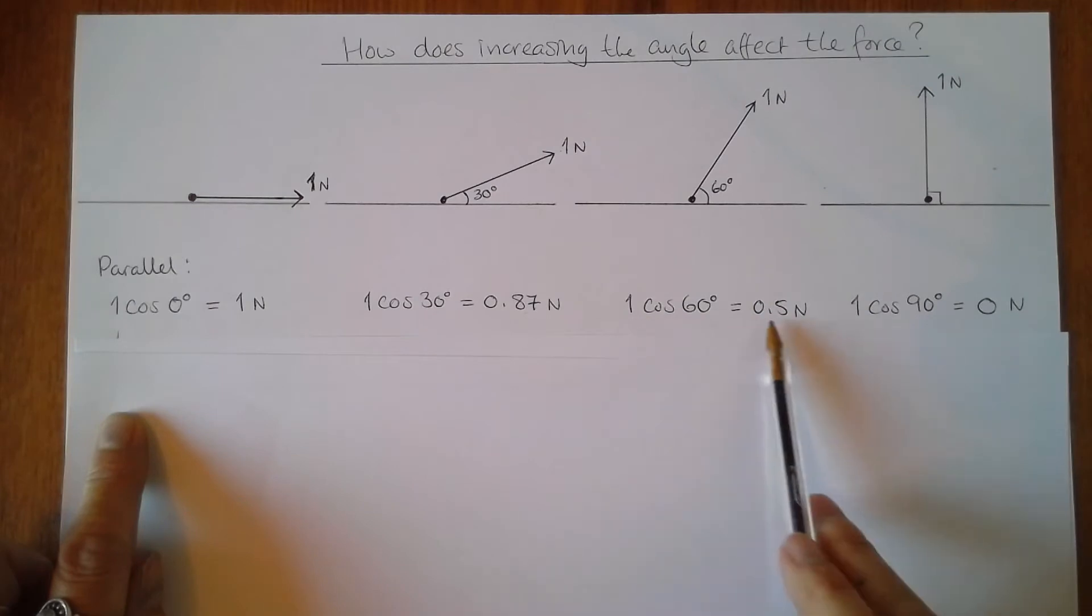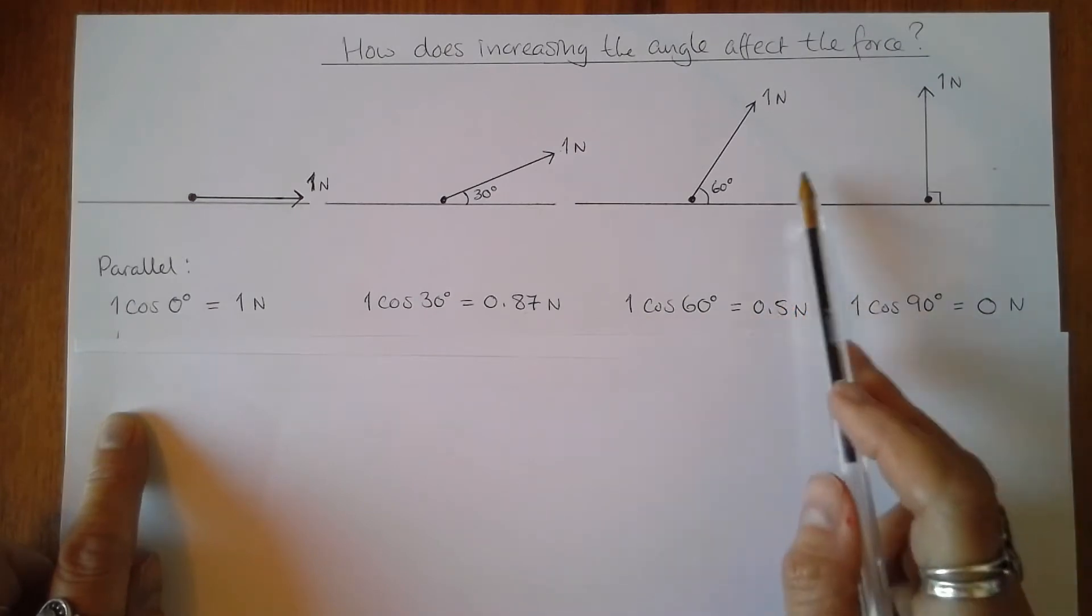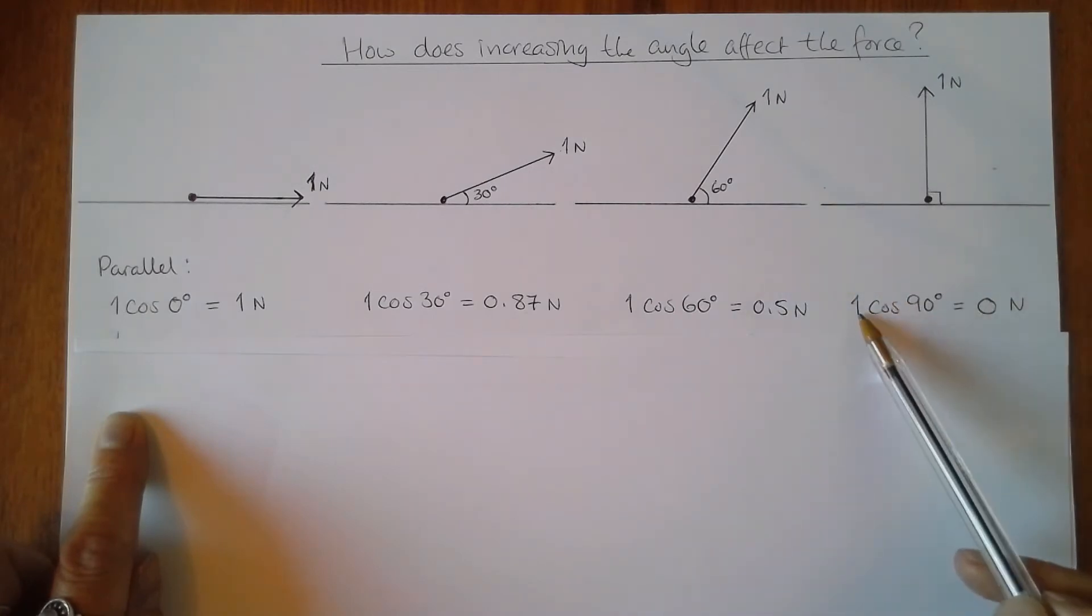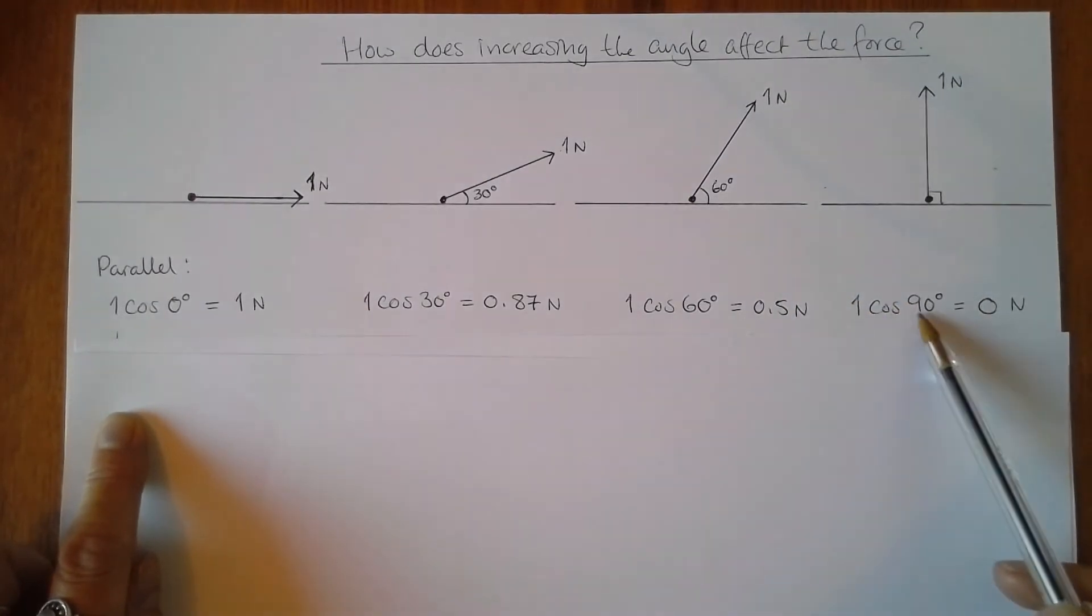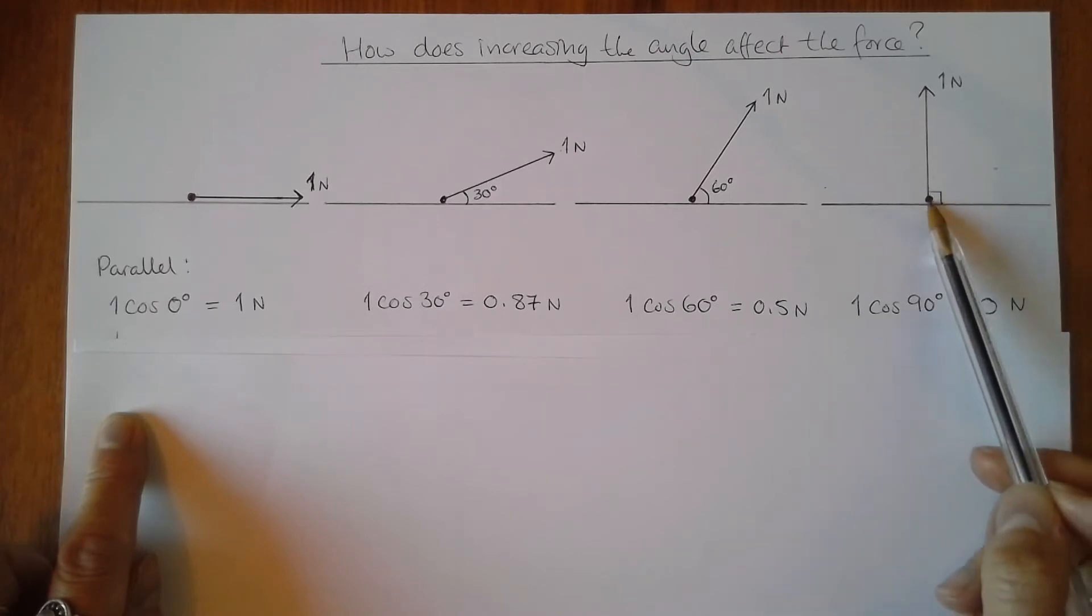And finally, increasing the angle to 90 degrees, one cos 90 is equal to zero, and there is zero newtons of force acting in the parallel direction.